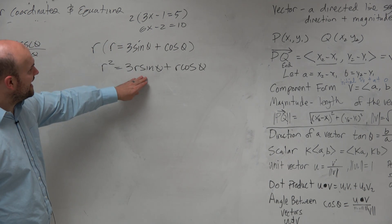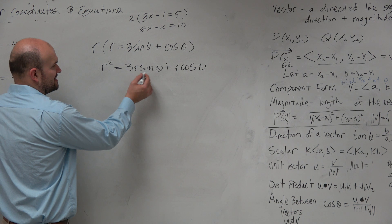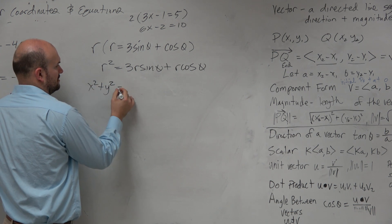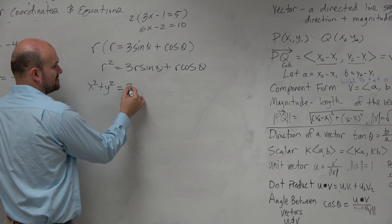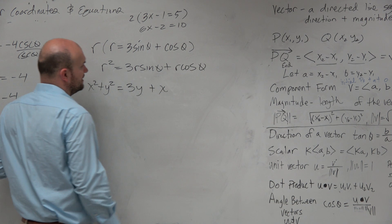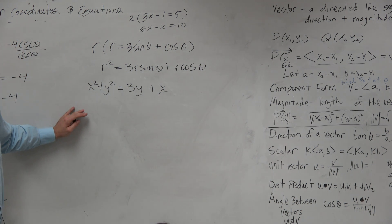All right, so now what I can do is I can represent this with x squared, y squared. Here, I can represent this with 3y. And here, I can represent this with x. Now, I did not pick a very fun numbers to work with. And I apologize for that. I've got to remember that. But this is technically in rectangular form. That's perfect.